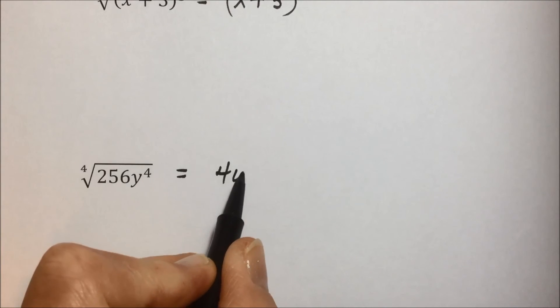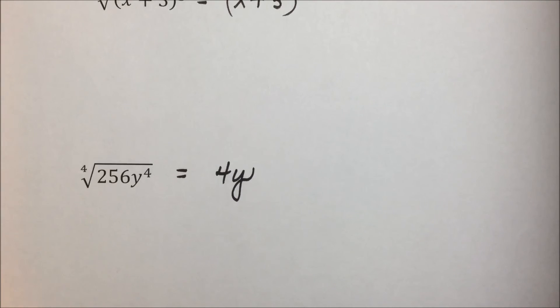Y to the fourth would be y. Under normal circumstances, without the special instructions, to ensure that we have the non-negative root, we would put absolute value signs around our y. But in this case, because again of the instructions, we're safe by just answering 4y for our solution.